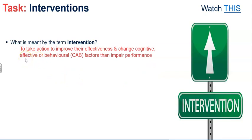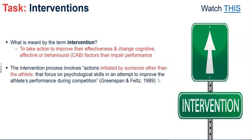Interventions can include things like anger management goals and strategies that affect how they act. These cognitive, affective, and behavioural factors will be quite frequently mentioned through the psychology unit. Often these interventions are not just something the athlete does on their own — they work with a coach, a personal trainer, or a sports psychologist, initiated by someone other than the athlete to give them the skills they need to manage those qualities.